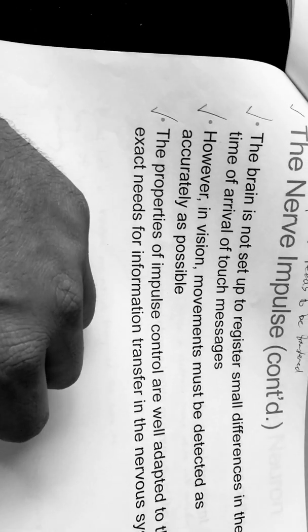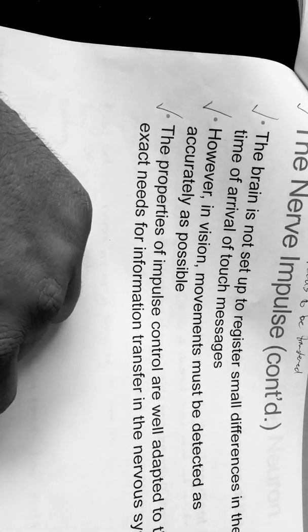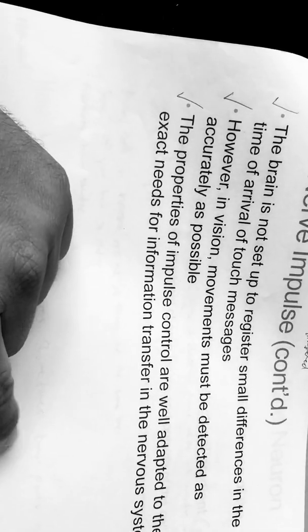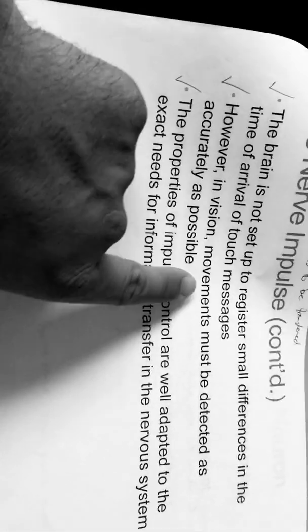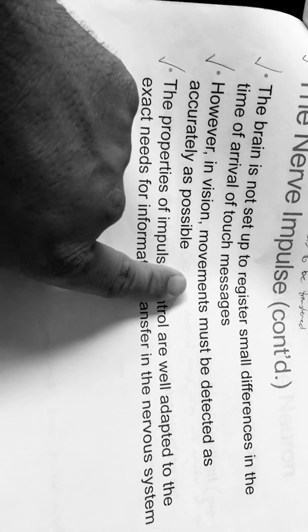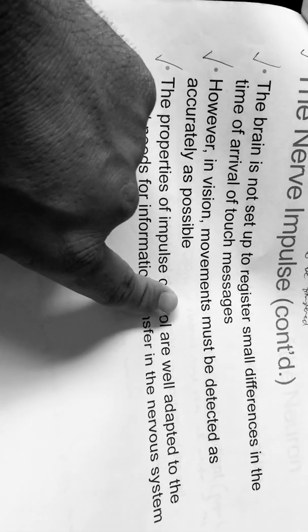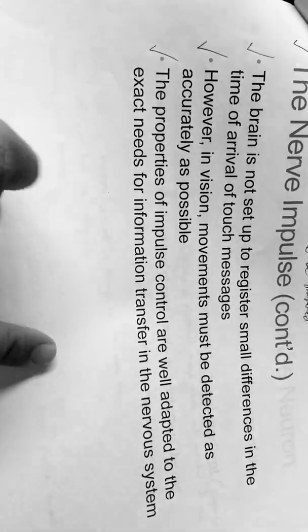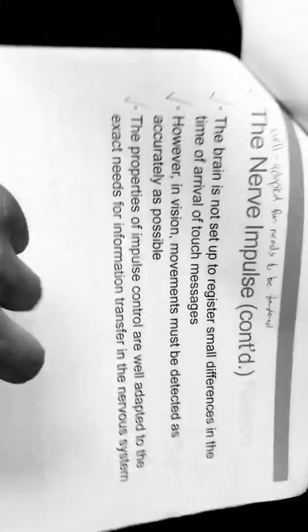The brain is not set up to register small differences in the time or arrival of touch messages. However, in vision, movement must be detected as accurate as possible, so the way the eyes are designed, it picks up a lot of messages at once.